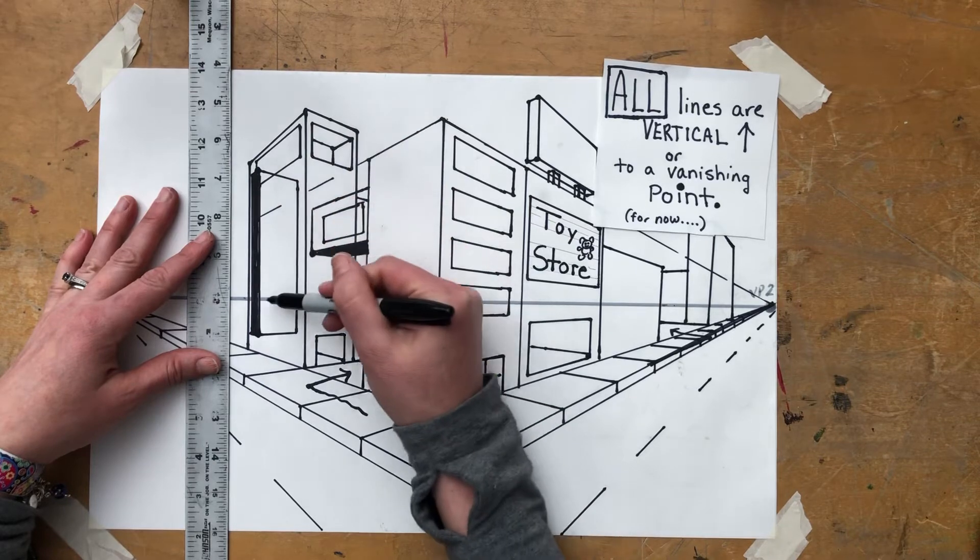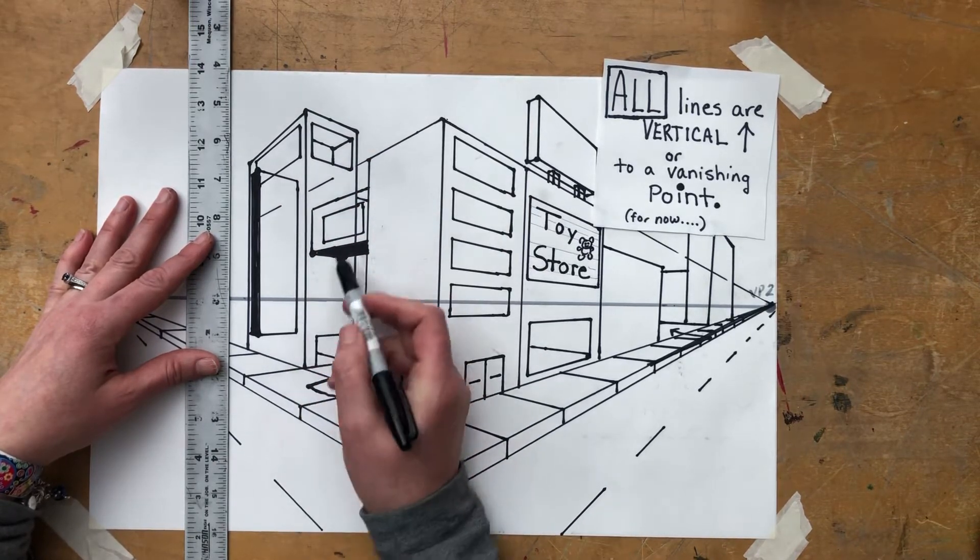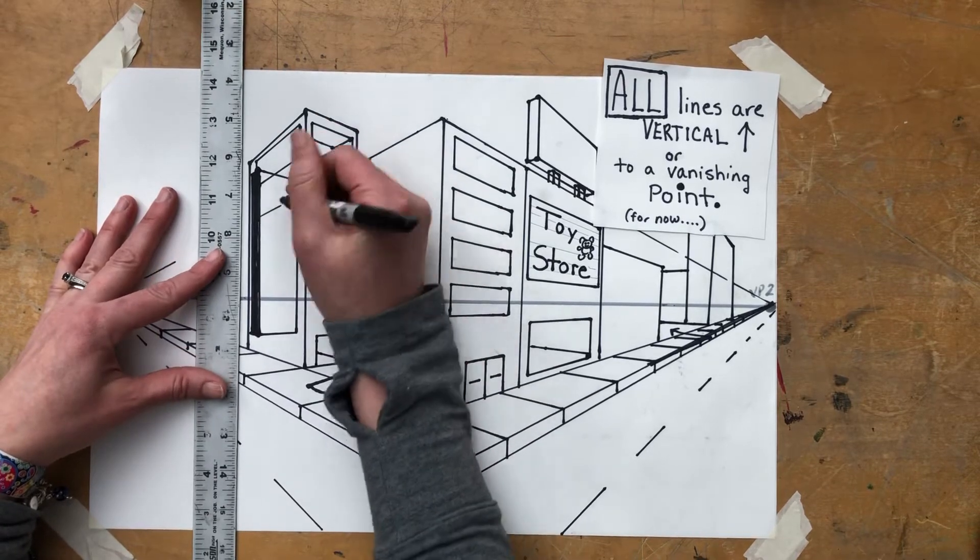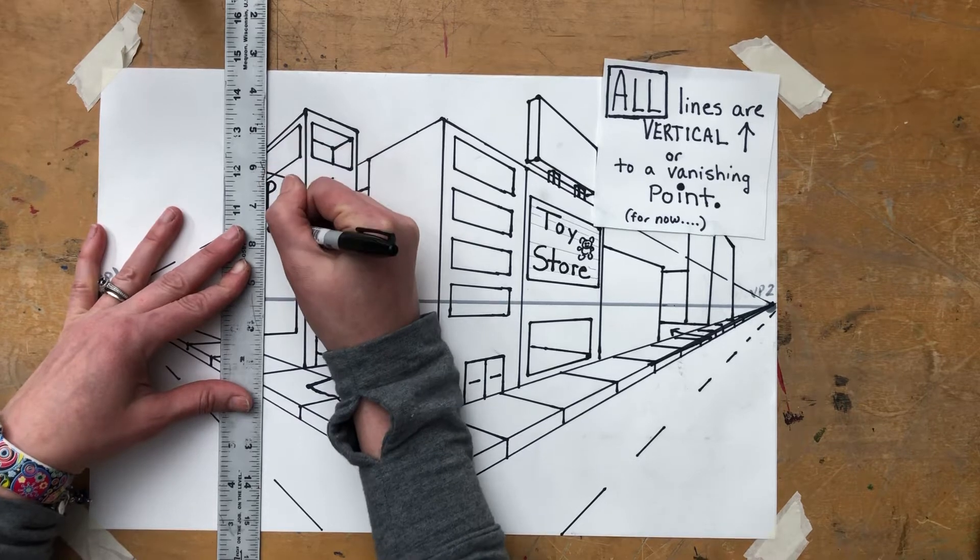Now, because the sign is going over the horizon line, it's not above it and it's not below it, we don't have to show the bottom of it or the top of it. And then on this sign, we can, using a vertical line, write something like parking.